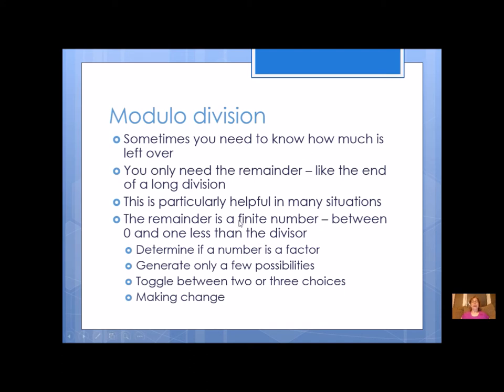The remainder of any kind of division problem is a finite number. It's always something between zero and one less than the divisor. This means if I'm dividing by five, the only possibilities are zero, one, two, three, and four. If I'm dividing by three, the only possibilities are zero, one, and two. That's pretty handy, because this really narrows down what you can do, or maybe what your needs are.